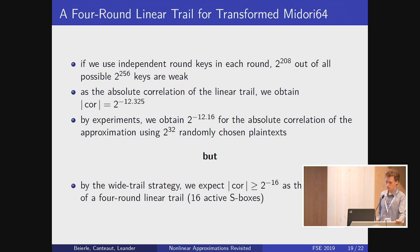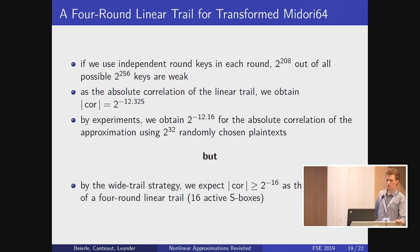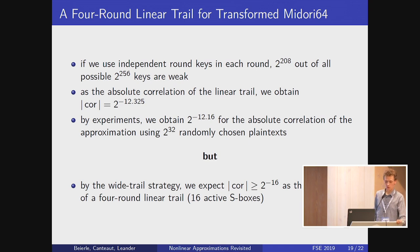Interestingly, looking at normal linear cryptanalysis with the wide-trail strategy, you know there are at least 16 active S-boxes in every four rounds, so you would expect the absolute correlation to be at most 2 to the minus 16. By looking at this nonlinear transformation, we have shown there is a significantly smaller correlation.